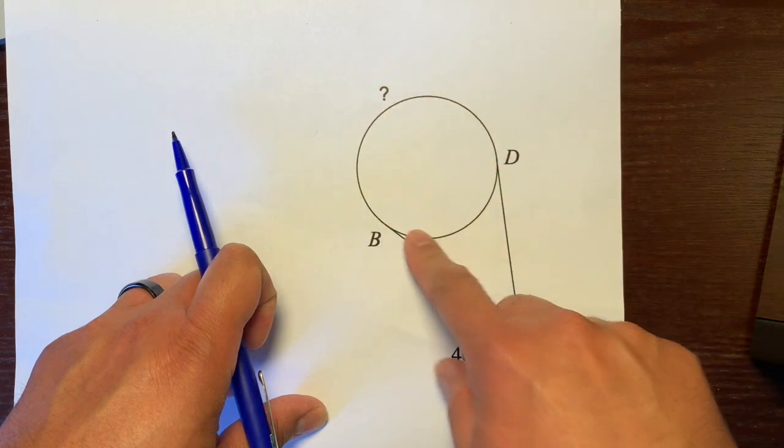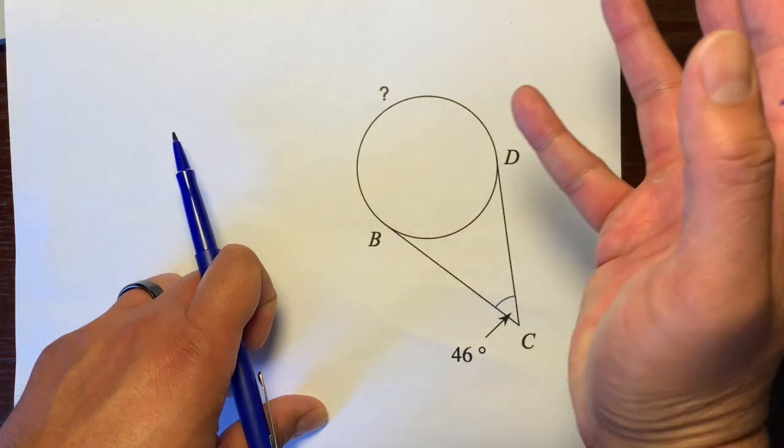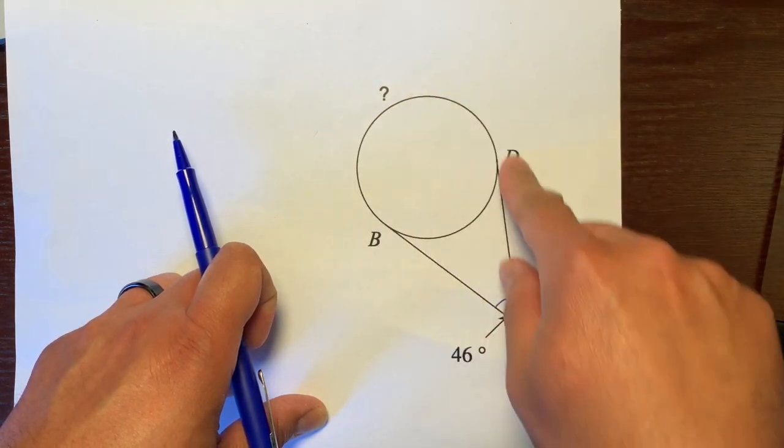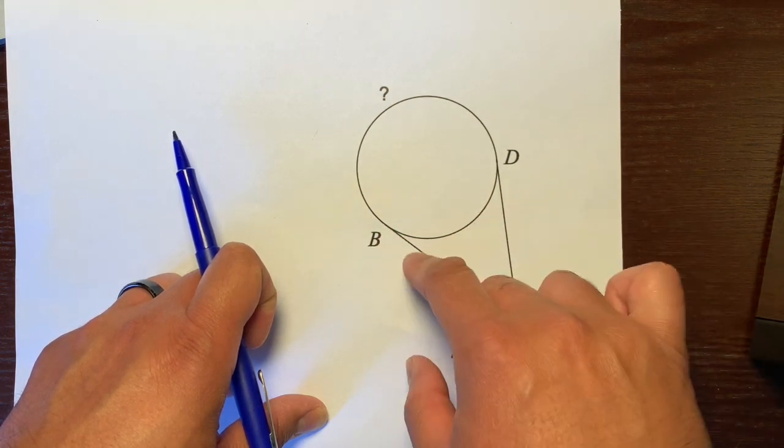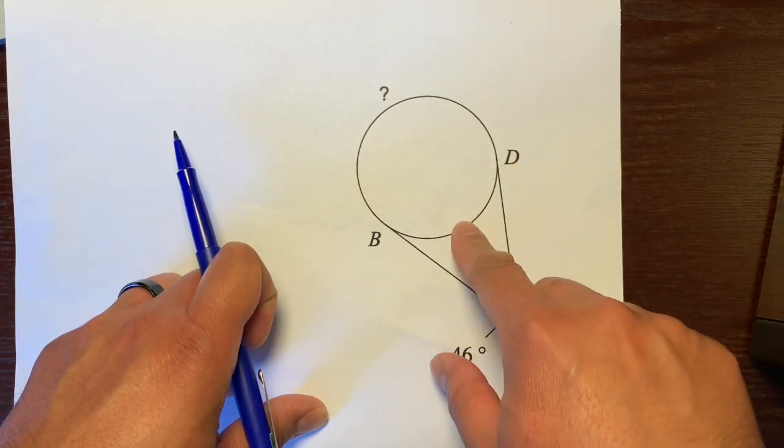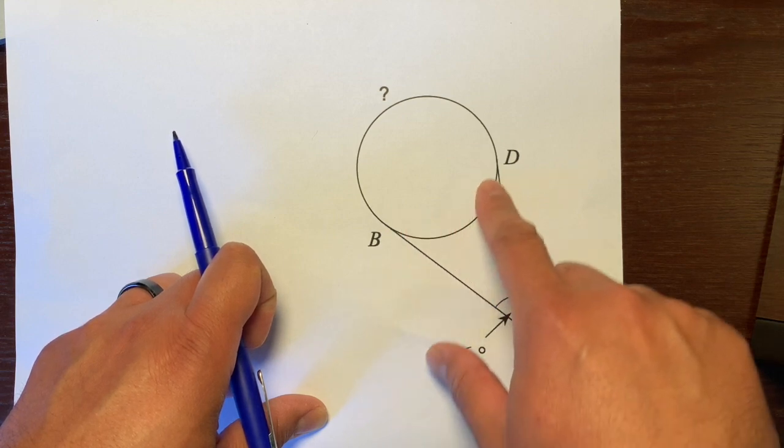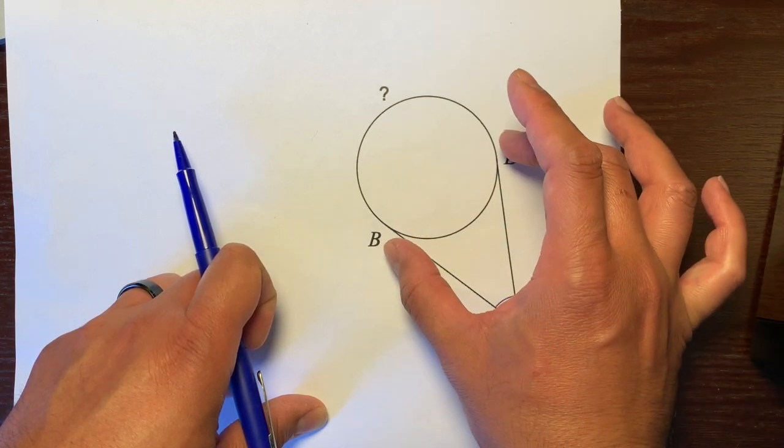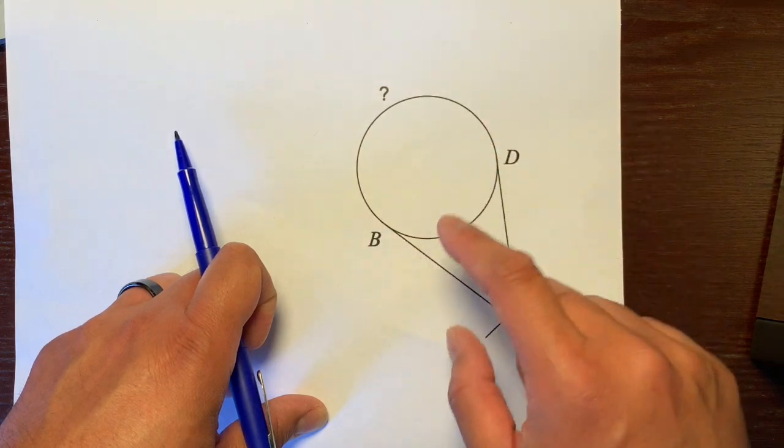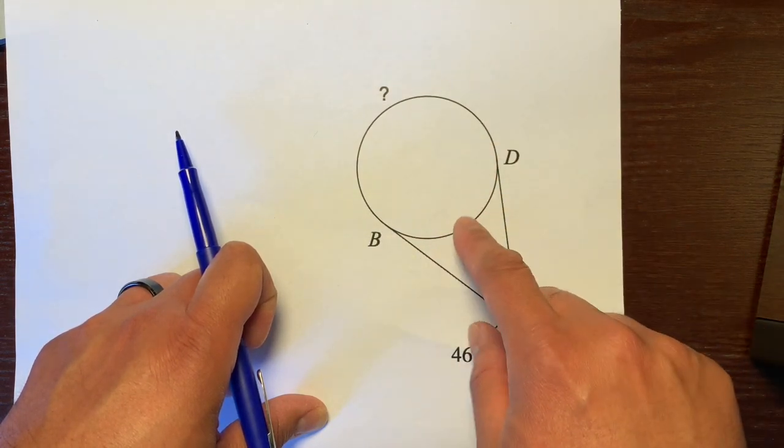Well, we know the entire circle is 360 degrees. Obviously, this isn't 1 degree because it's way more than that. But to figure out what this arc is, we just subtract 1 from 360 and get 359. So we take this arc and subtract it from 360 to get this arc.